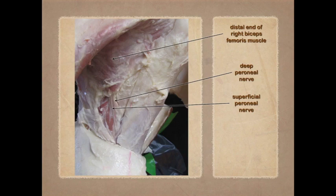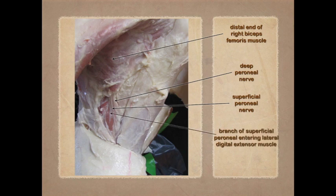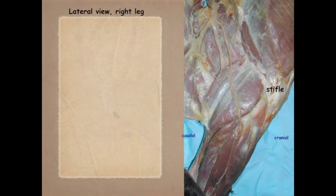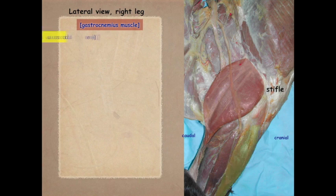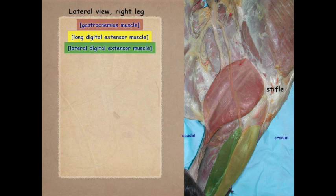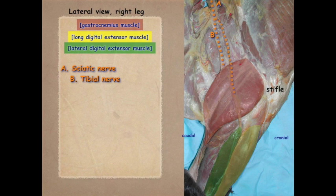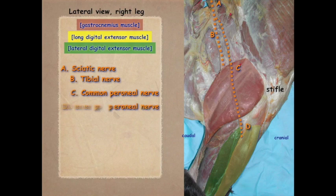A branch of that superficial peroneal nerve is going to supply the lateral digital extensor muscle. Here once again: gastrocnemius muscle, long digital extensor, lateral digital extensor. Here's our sciatic nerve coming down, branching into the tibial nerve. The common peroneal nerve gives rise to the deep peroneal nerve and the superficial peroneal nerve. That superficial peroneal nerve is often lost when we skin the animal.